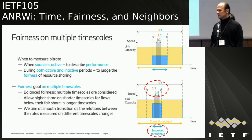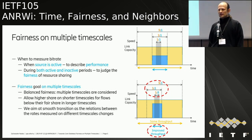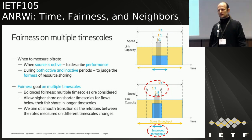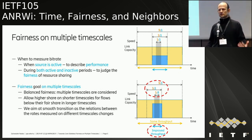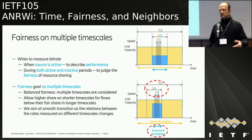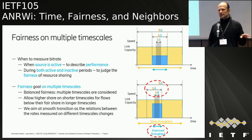This makes sense because we can have fairness on multiple timescales. We can measure bitrate only when the source is active to describe its performance, but we can also measure bitrate during both active and inactive periods to judge fairness of resource sharing. A fairness goal on multiple timescales is to balance the bitrate measurements, allowing higher share on shorter timescales for flows below their fair share on longer timescales.